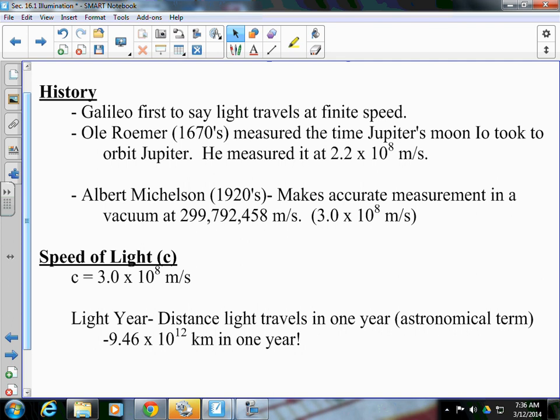Then, we come into the 20th century and Albert Michelson makes the accurate measurement in a vacuum at 3.0 times 10 to the 8th, which is what it is. If you want to get technical, it's 2.99972 and more decimals after that times 10 to the 8th.